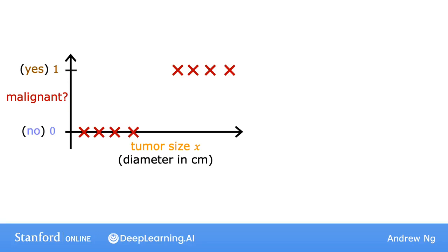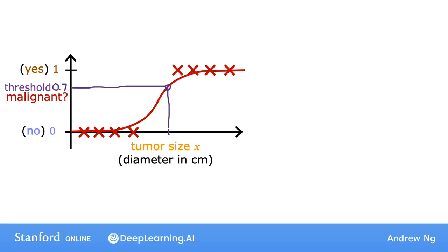You saw in the last video that linear regression is not a good algorithm for this problem. In contrast, what logistic regression will end up doing is fit a curve that looks like this — a sort of S-shaped curve to this dataset. For this example, if a patient comes in with a tumor of this size, which I'm showing on the x-axis, then the algorithm will output 0.7, suggesting that it's more likely to be malignant than benign. The output label y is never 0.7; it is only ever 0 or 1.